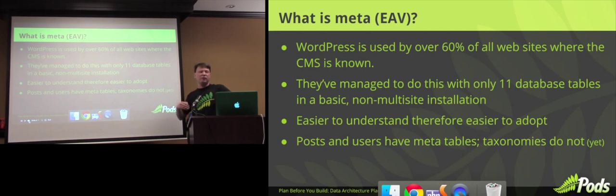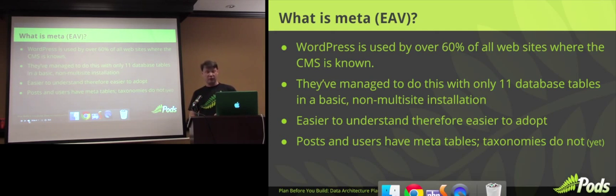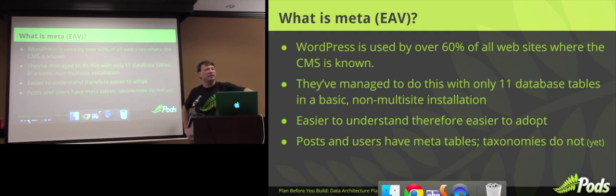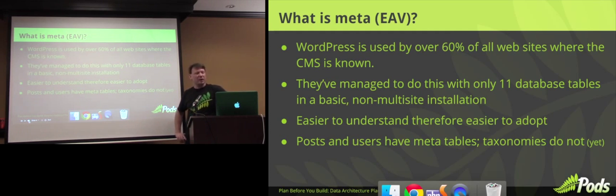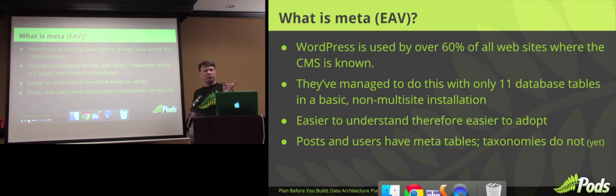The storage used when you're using custom post types and users and adding new data to those is known as metadata in WordPress. People who have worked with databases a lot may be familiar with EAV — entities, attributes, and values. You basically have whatever the attribute is, like color, the value is there, and you can add a whole bunch of those.